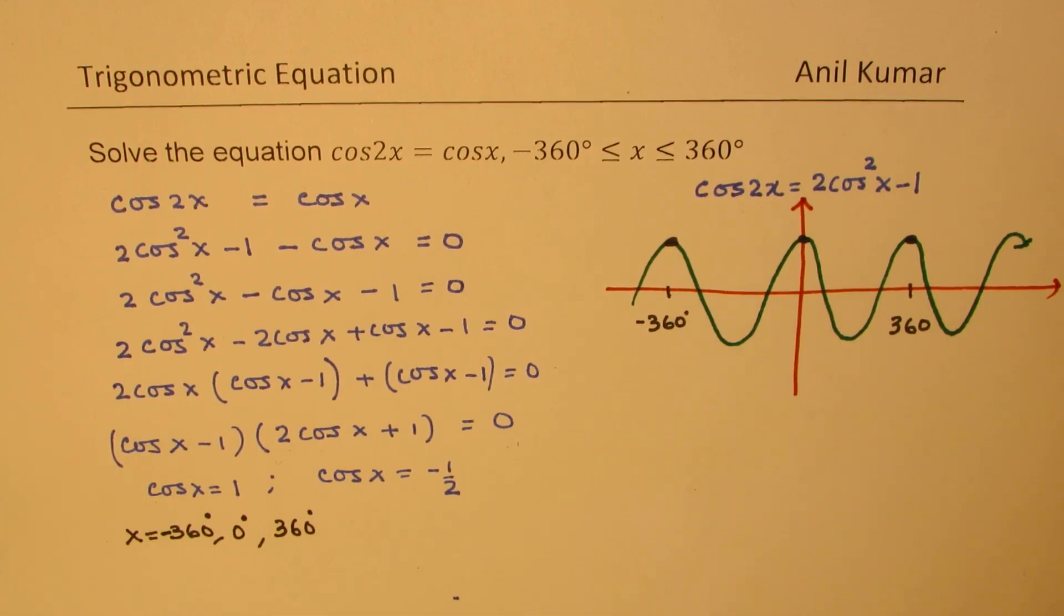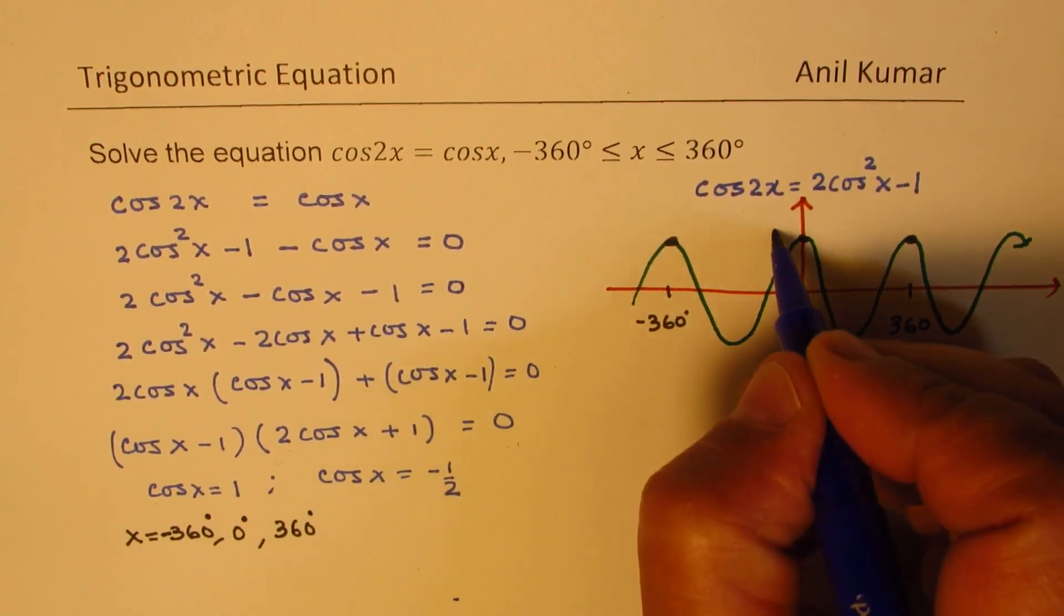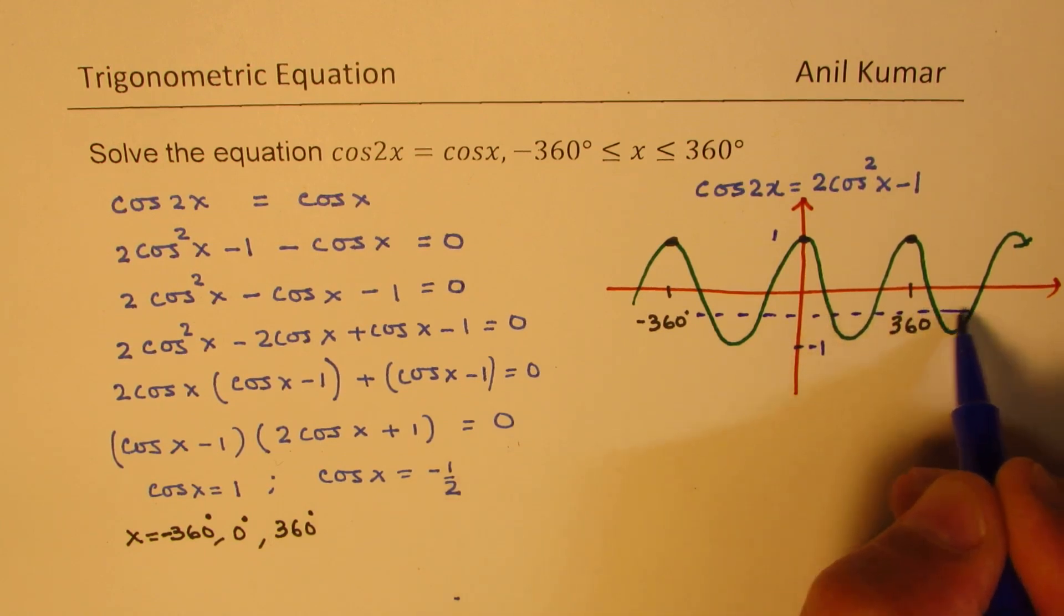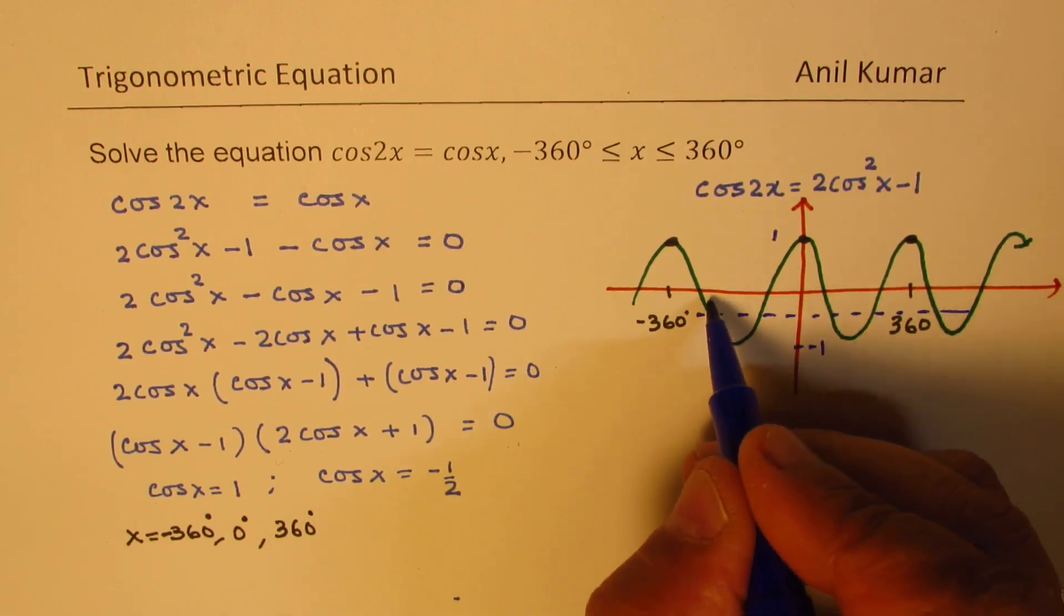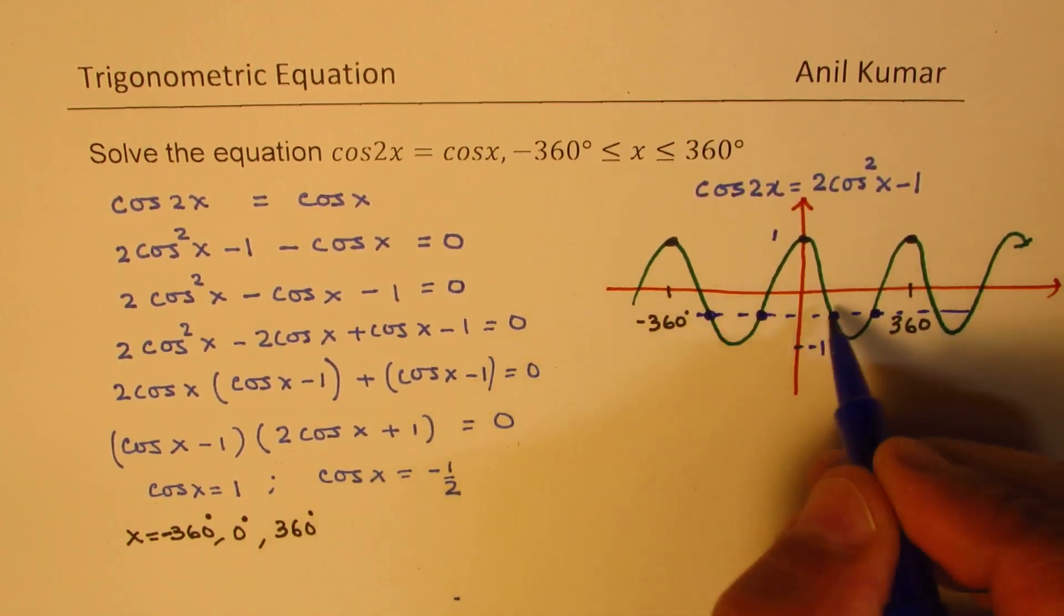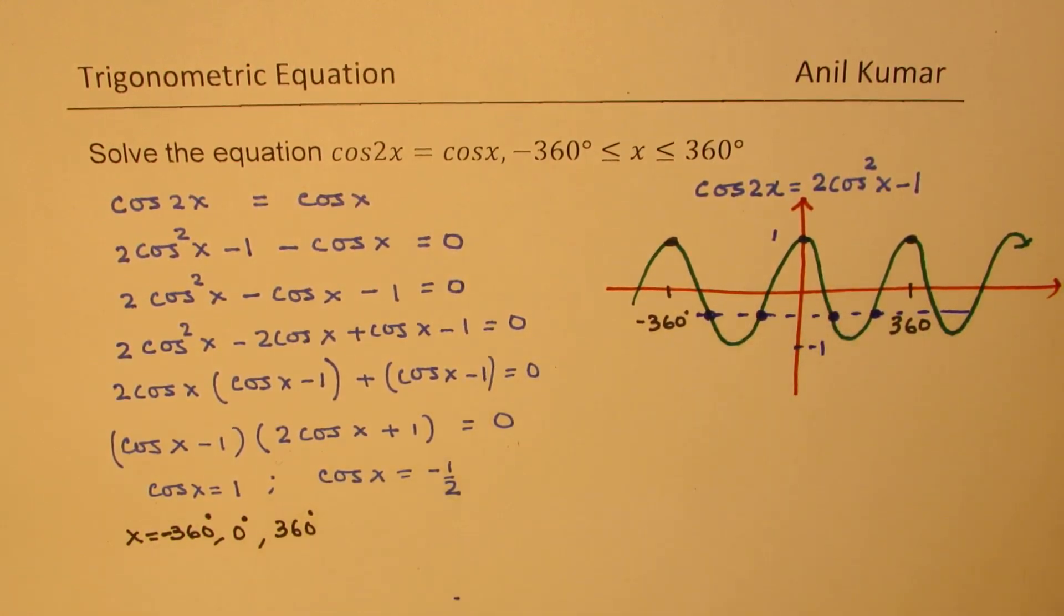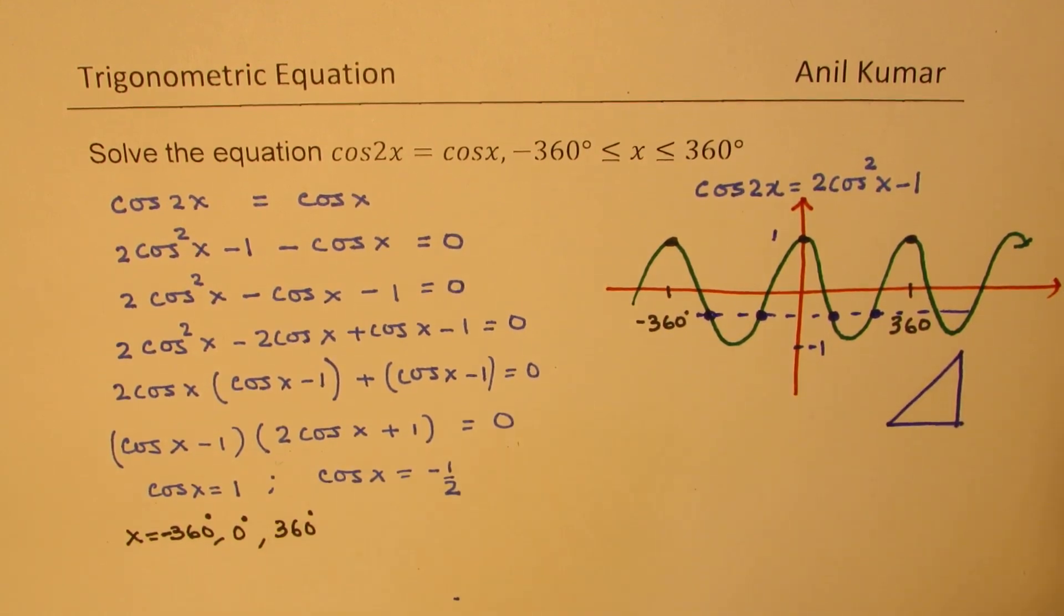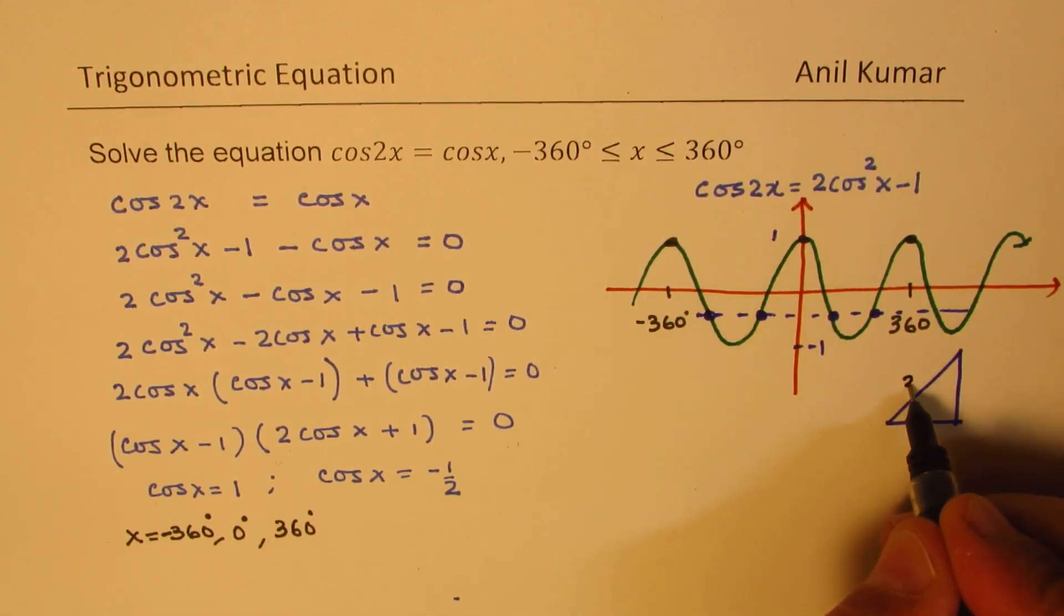Now for what values do you get minus half? Minus half, this is like minus 1, this is plus 1. So somewhere here. So for minus half, we have these values. So we have 4 values for minus half. To get these values, we can actually look into our triangle, which is 30, 60, 90 triangle. For 60 degrees, we get cos as half.